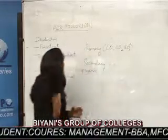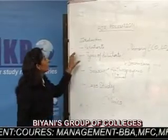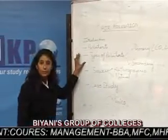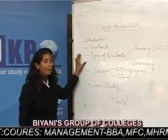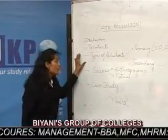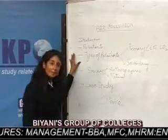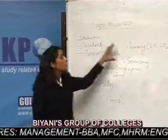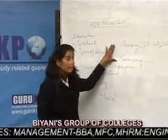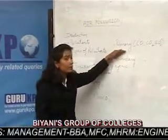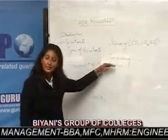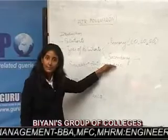Now we come to types of pollutants. Generally, we divide these pollutants into two categories: primary pollutants and secondary pollutants.